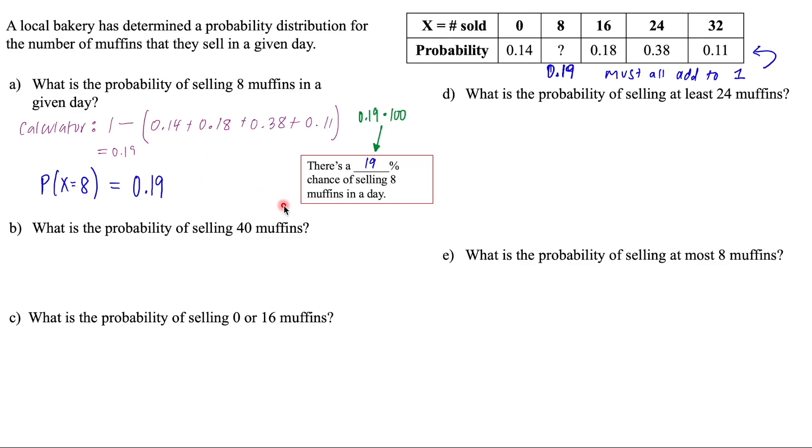And then if you're in my class, we always like to interpret that answer. So what we're going to do is we're going to take that decimal value probability and multiply it by 100 to get it into percent notation. So there's a 19% chance of selling eight muffins in a given day.